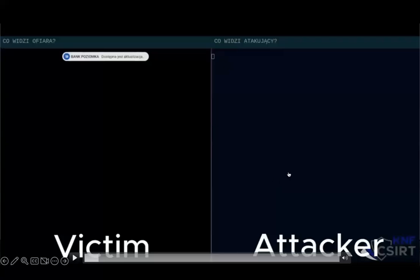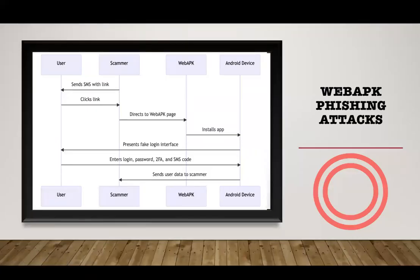The Web APK phishing attack began with victims receiving SMS messages suggesting they update their mobile banking application. The link contained in the message led to a site using Web APK technology to install a malicious application on the victim's device. Crucially, this installation did not trigger the typical warnings about installation from untrusted sources. After installation, the app presented a fake mobile banking login panel, asking for login credentials, password, two-factor authentication code, and SMS transaction codes.